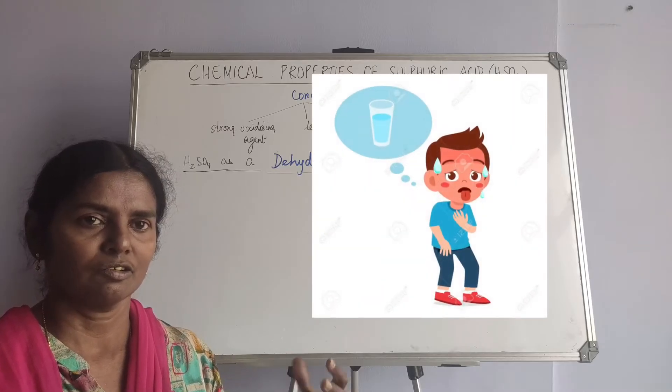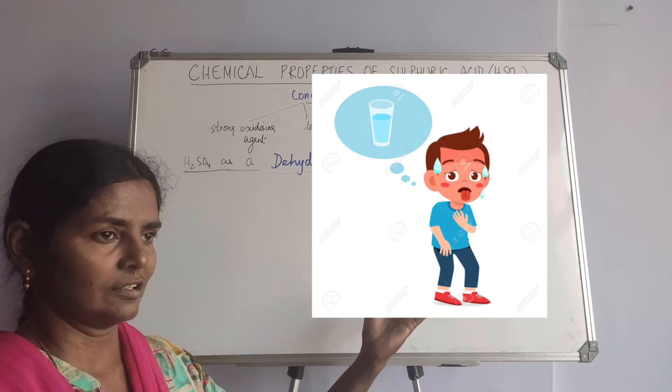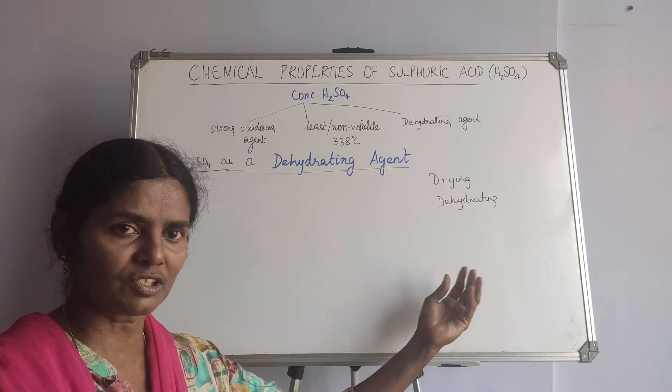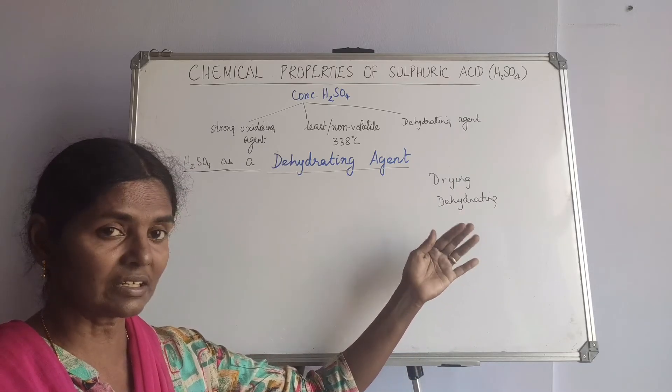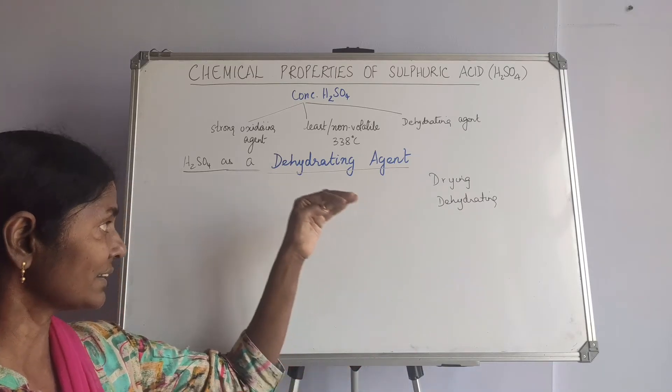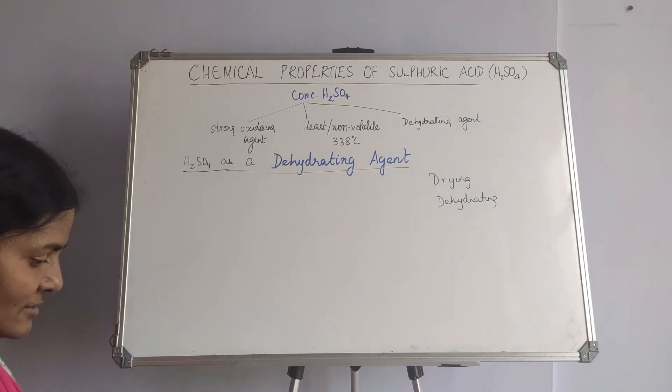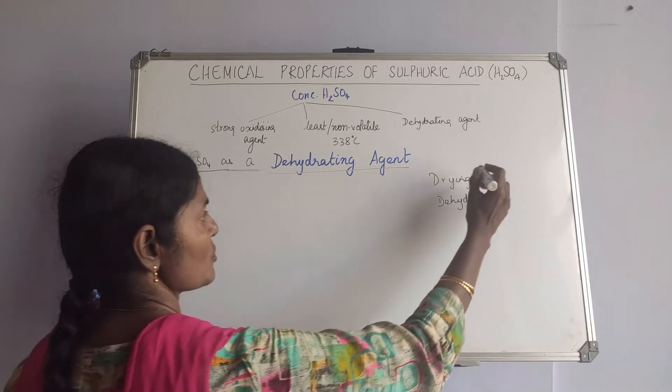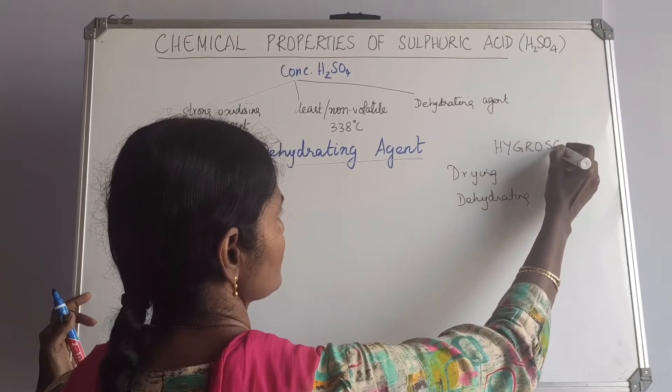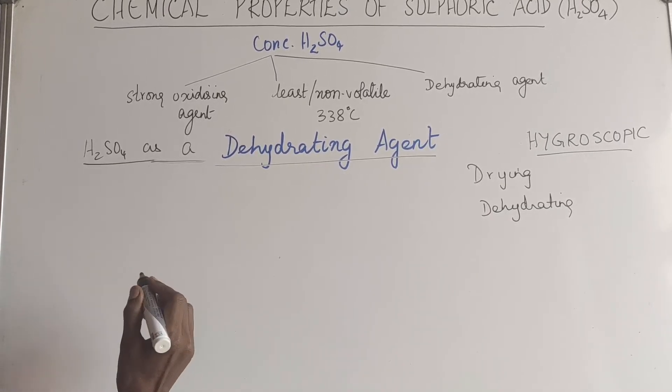When you feel dry, when you are thirsty, you feel you are dry, your mouth is dry and you just drink a little bit of water and then you are fine. But if you have severe vomiting and a lot of water is lost from the body, then you say you feel dehydrated. It means water is removed from the structure. That strength that this sulfuric acid has because it is a hygroscopic liquid. You should not forget this word hygroscopic. This we learn with some examples.